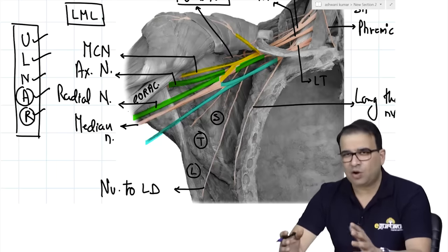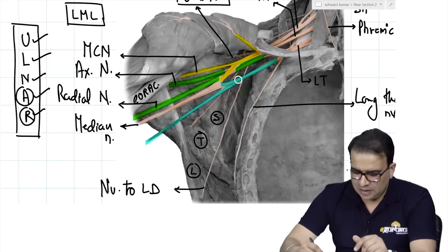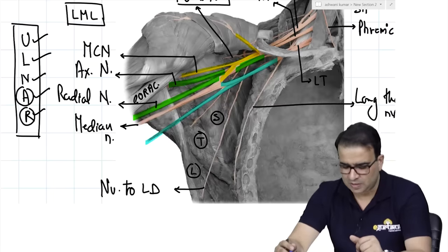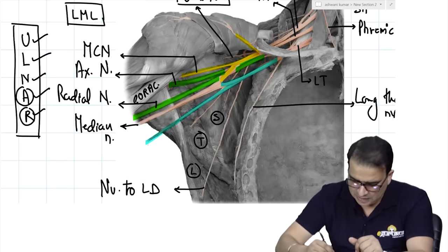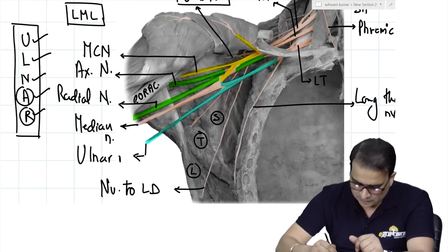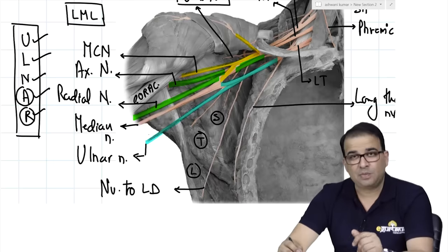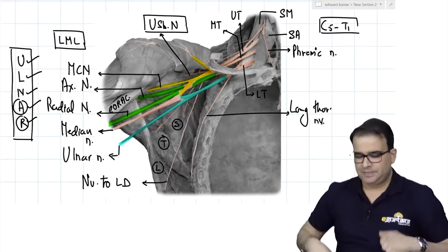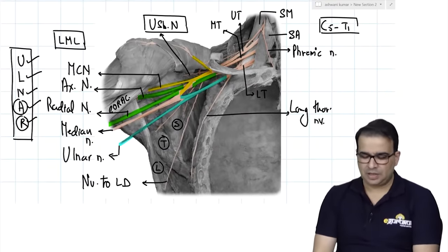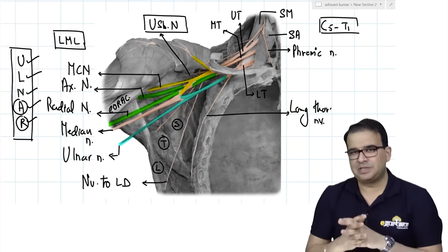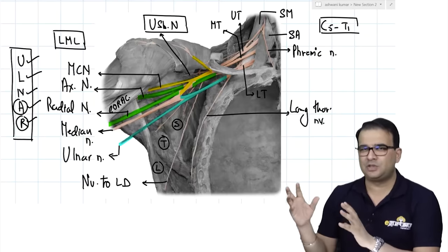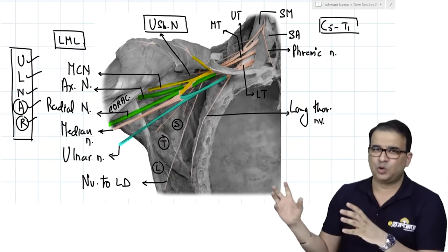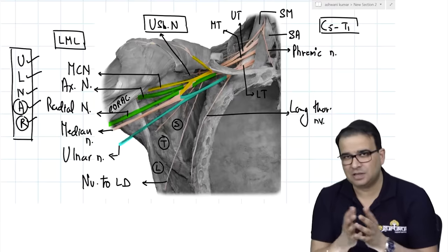From the medial cord come many branches: the medial root of the median nerve, medial cutaneous nerve of arm, and medial cutaneous nerve of forearm — though the cutaneous nerves are not shown here. The major nerve from the medial cord is the ulnar nerve, clearly seen coming from the medial cord of the brachial plexus. For the exam, focus on identifying the major branches: radial, axillary, ulnar, and median nerve — you should know how to identify them in a picture.